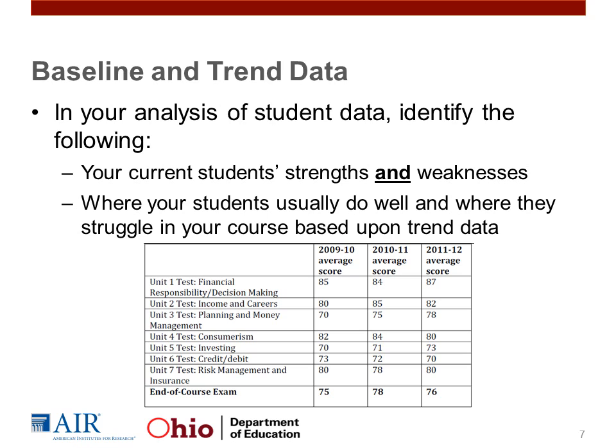If you have trend data on your current students, you may also be able to identify whether strengths and weaknesses tend to be persistent over time. For example, you might see that a group of students have consistently performed poorly in a skill over time. In addition, you should determine where your students usually do well and where they struggle in your course based upon trend data. For example, a table might summarize student performance in a financial literacy course for the past three years, allowing you to identify units where students have historically struggled and units where they tend to perform well. This information can help you identify areas you might want to address in your SLO.